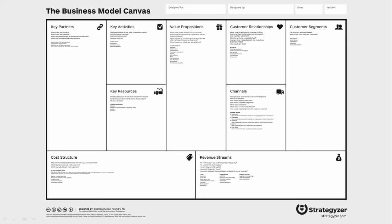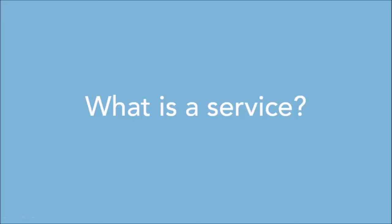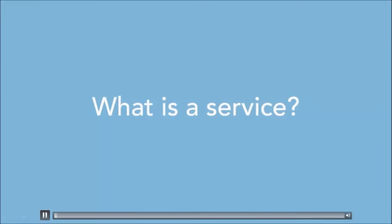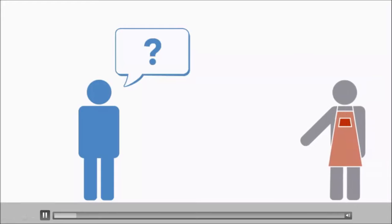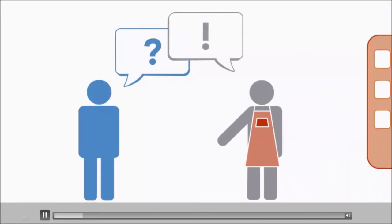Before we start looking at the service model canvas, there's an important question: what is a service? When we talk about a service, what do I mean? A service is an interaction between a customer and a provider or an organisation to help the customer get things done.